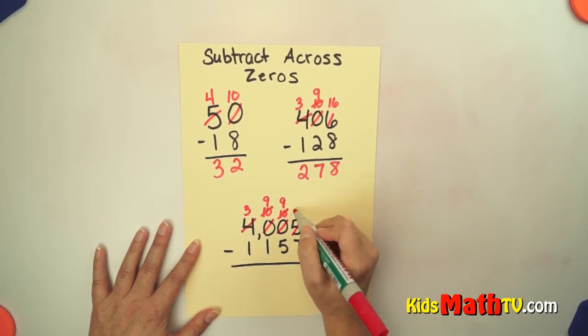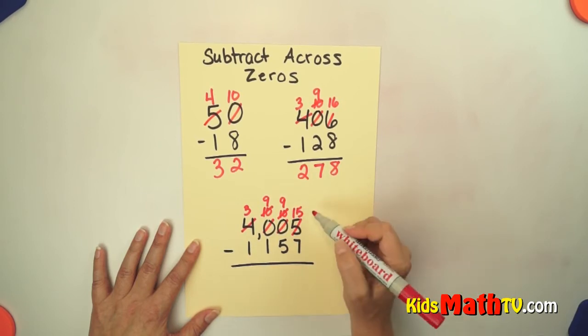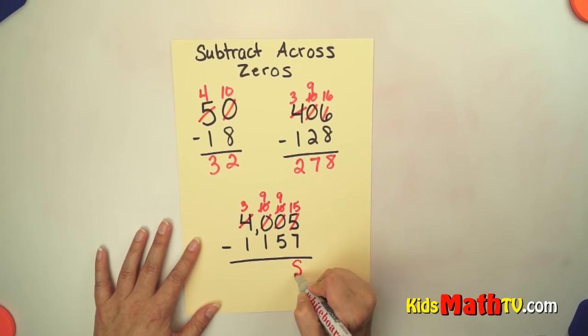And this 5 becomes 15. So now I have 15. Subtract 7 is 8.